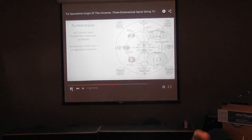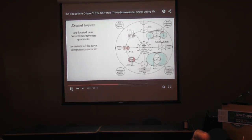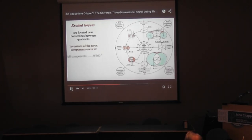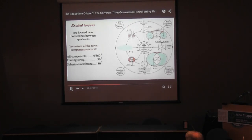Excited Tauruses are located near border lines between quadrants. Invergence for the Tauruses' components occurs at: all components 0 to 360 degrees, trailing string 90 degrees, spherical membrane 180 degrees, and linear string 270 degrees.